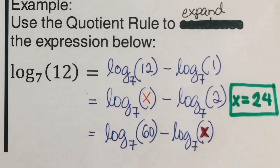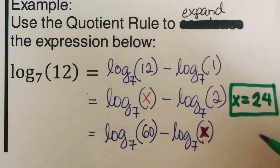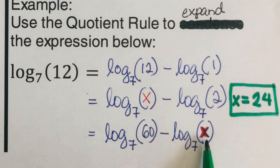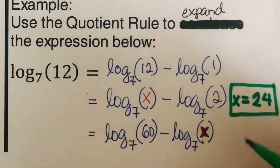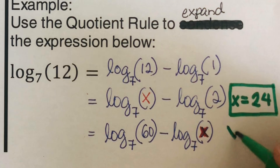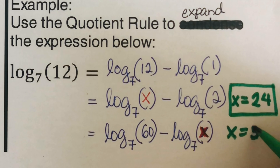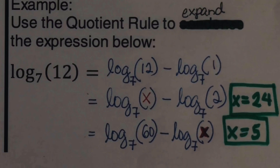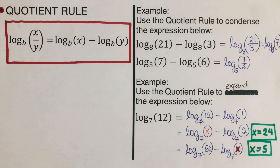In the next problem, what number when we divide 60 by x gives us 12? That number is 5, so x equals 5. 60 divided by 5 is 12.